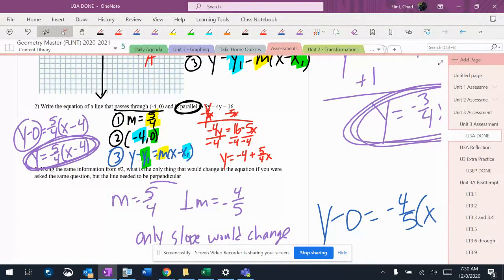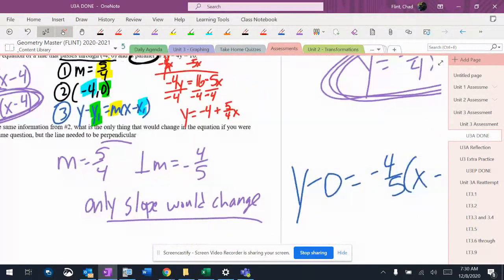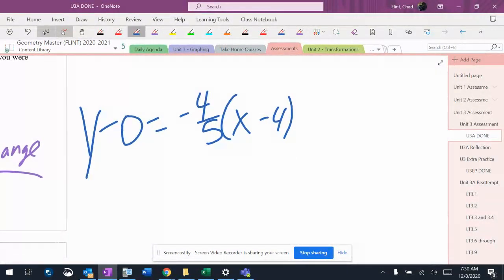But actually, this just made me realize that I screwed up that last one. It should be x minus negative 4. I'm going to have to go back and fix that video. So x minus negative 4, so it would actually be y equals negative 4 fifths times x plus 4.